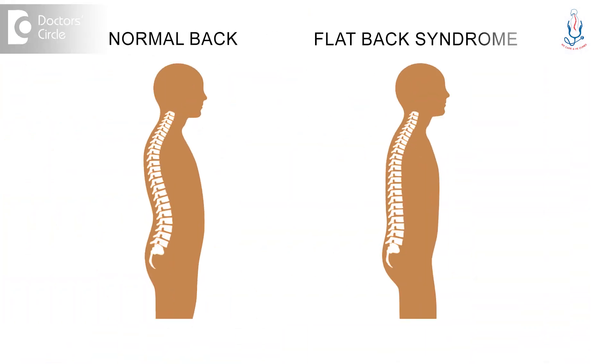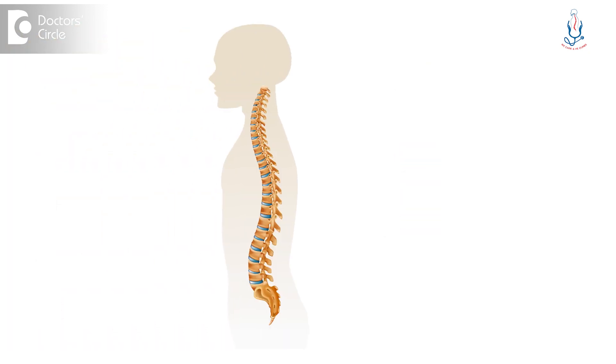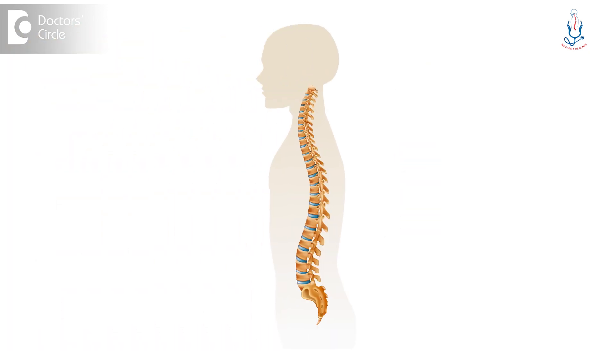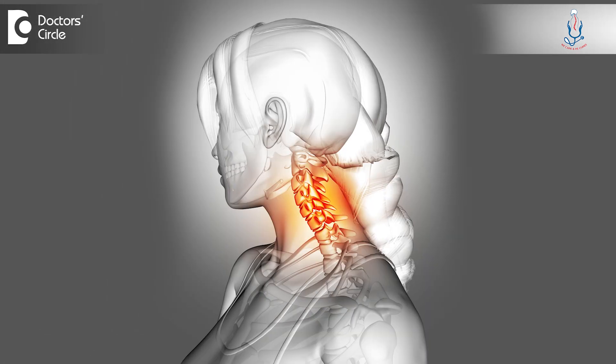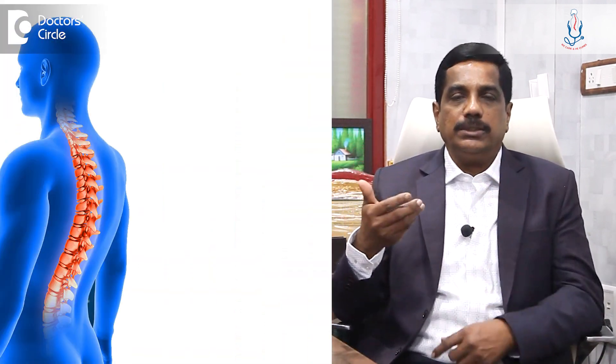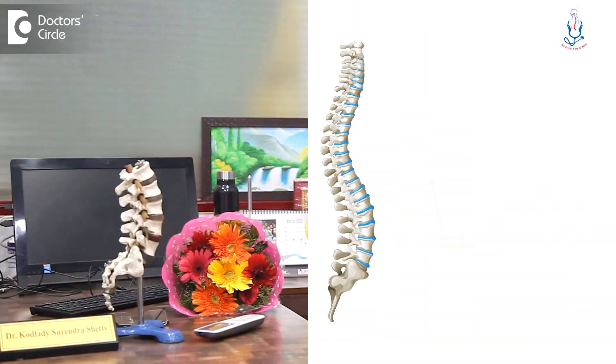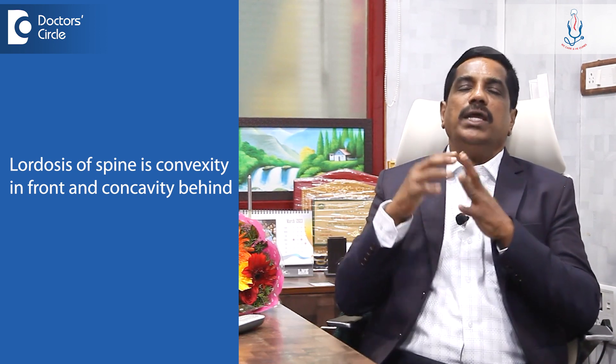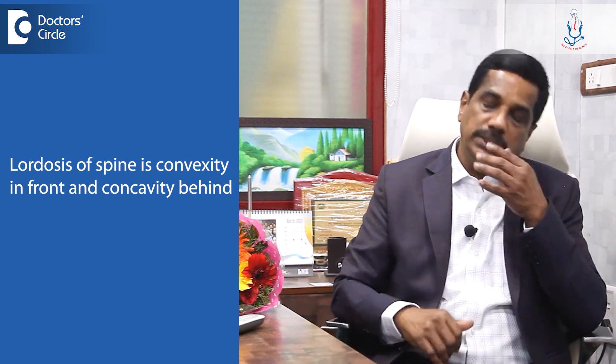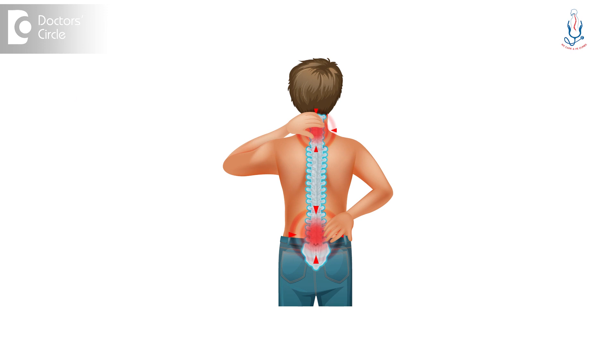Flat back is the flattening of the lumbar spine. The human spine has definite curvatures: in the cervical region, that is the neck region, there is convexity in front. In the thoracic spine, it is the reverse — concavity in front and convexity behind. In the lumbar spine, it is convexity in front and concavity behind, which we call lordosis. Lordosis is present in both the cervical and lumbar regions.